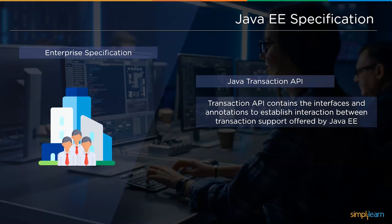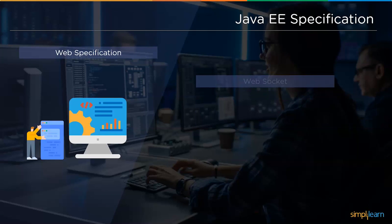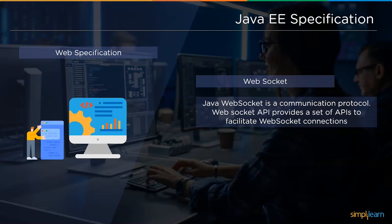Moving into Java web specifications, the first one is the Java Servlet. This specification defines how you can manage HTTP requests either in a synchronous or asynchronous way. It is low level and other specifications completely depend on it.